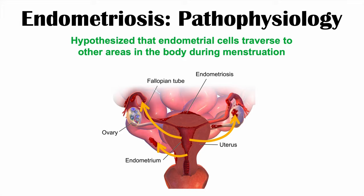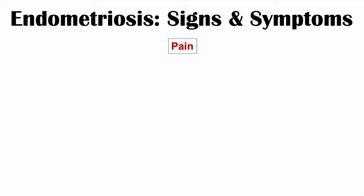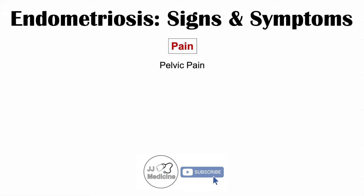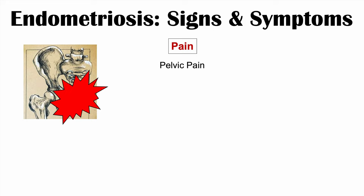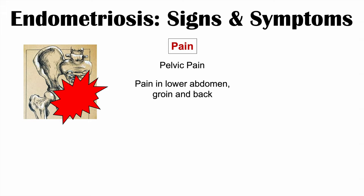Now that we've talked about what it is and how it happens, what are some of the signs and symptoms of endometriosis? One of the most significant symptoms patients suffer from is pain — pain in certain parts of the body, but also during certain activities. The first is pelvic pain, which is a significant issue and fluctuates in intensity throughout the menstrual cycle, since the endometrial cells respond to hormonal changes. We can also see pain in the lower abdomen, groin, and back.